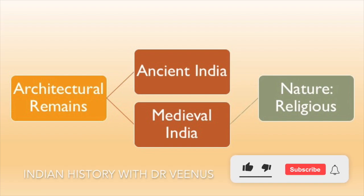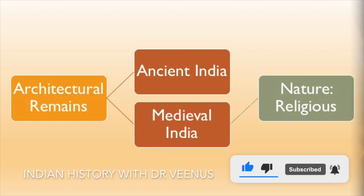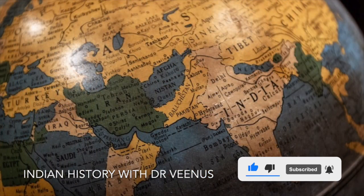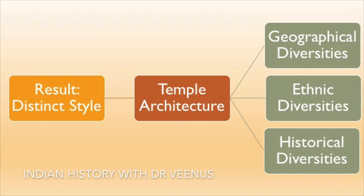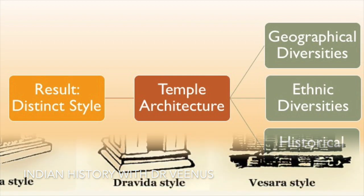Most of the architectural remains that survive from ancient and medieval India are religious in nature. In different parts of the country, distinct architectural styles of temples were a result of geographical, ethnic and historical diversities.